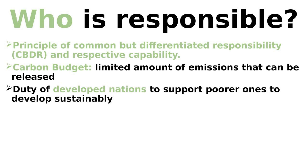That sounds fair, right? There's only a limited amount of greenhouse gas emissions that can be put into the atmosphere and stay below 2 degrees of warming, let alone 1.5 degrees — this is often called the carbon budget. And developed nations have used up a lot of this budget already; that's how they got their industries going. Think of it like a pie where only a few crumbles are left, as the wealthy have eaten almost all of it already. The poorer nations who haven't eaten yet should have the right to develop as well. Just as the cake — or greenhouse gas emissions — are unhealthy, it is the duty of the developed nations to support poorer ones to develop sustainably.